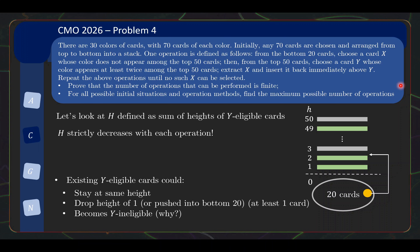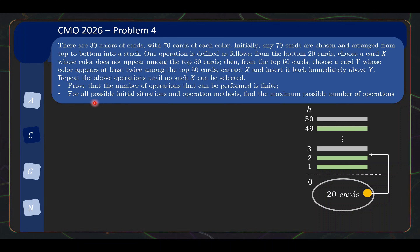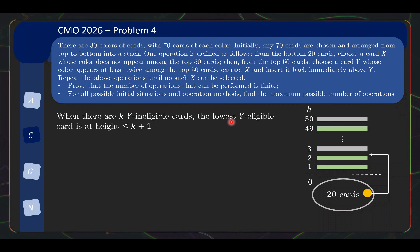As mentioned, this proof wasn't strictly needed for part two, but looking at Y-eligible cards and heights will play an important role in the second half. Now for part two: among all possible initial scenarios and operation choices, we need to find the maximum possible number of operations. The most important concept turns out to be the lowest Y-eligible card, so let's make a few observations about it.